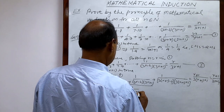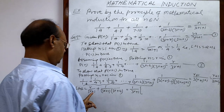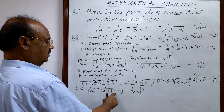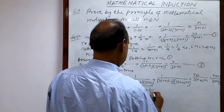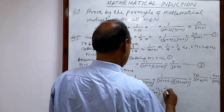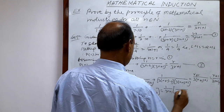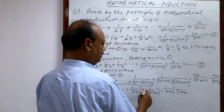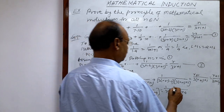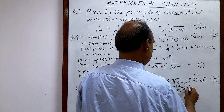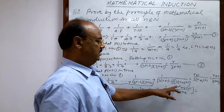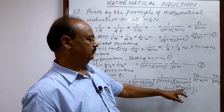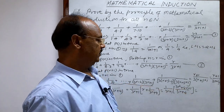Taking 1/(3r+1) as common, we get 1/(3r+1) × [r + 1/(3r+4)]. Simplifying with LCM 3r+4 in the bracket, the numerator becomes r(3r+4) + 1 = 3r²+4r+1. This is a quadratic expression, so we factorize by splitting the middle term: 3r²+4r+1 = 3r²+3r+r+1.